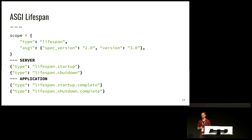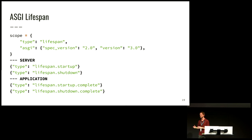There's one more part of ASGI: the lifespan protocol. One issue with WSGI is you can't decide to prepare something before the server starts receiving requests. A good example is creating a database connection pool — you want that done before the first request, otherwise it adds latency. The ASGI lifespan protocol allows the server to send a 'lifespan.startup' event; as an application you set up and send back 'startup.complete'. From that point the server can start accepting connections. Equally on graceful shutdown there's the opposite lifespan shutdown flow.